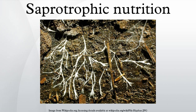Saprotrophic nutrition is a process of chemotrophic extracellular digestion involved in the processing of dead or decayed organic matter. It occurs in saprotrophs or heterotrophs, and is most often associated with fungi and soil bacteria. Saprotrophic microscopic fungi are sometimes called saprobes.